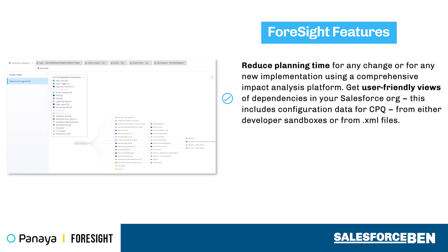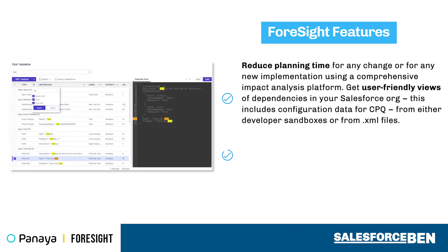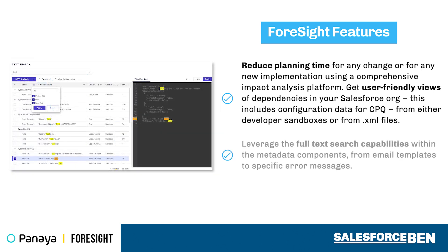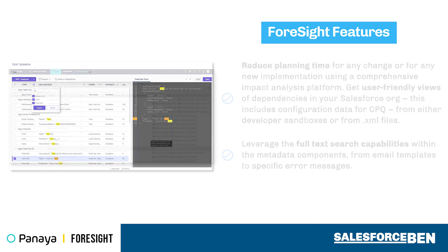You can also receive notifications about changes and who made them via email or Slack. Easily find any component within your connected org by leveraging Foresight's full-text search capability. For example, even when you have thousands of components to review, you can identify all of the references to a specific phrase or error message.